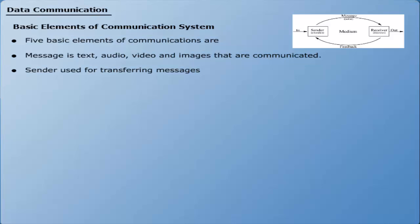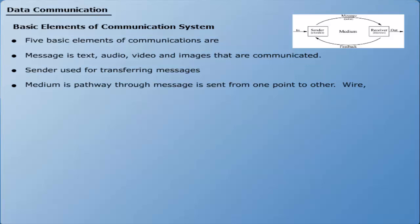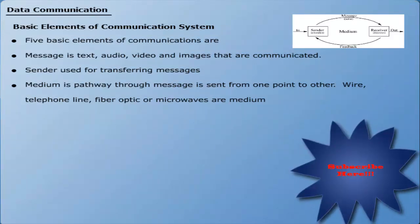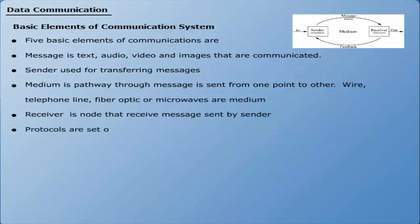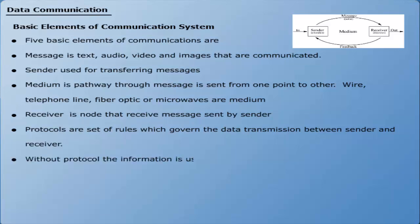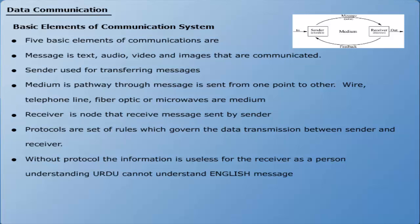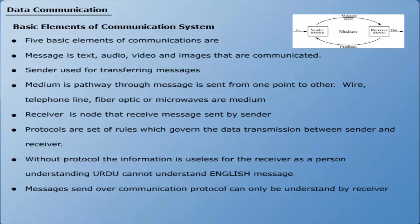Number 3: Medium — medium is the pathway through which a message is sent from one point to another. Wire, telephone lines, fiber optics, or microwaves are mediums used today. Number 4: Receiver — the node that receives the message is called the receiver. Number 5: Protocols — a protocol is a set of rules which govern the data transmission between sender and receiver. Without a protocol, the information is useless for the receiver — as a person understanding only Urdu cannot understand English messages. Therefore, messages sent through communication protocols can only be understood by the receiver.